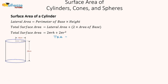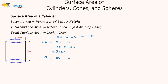Total surface area is lateral area plus two times the area of the base. Let's start with the lateral area. Lateral area is the perimeter of the base, which is 2πr times h. So this is going to be 2π times 14 times 25, which gives us 700π. Now the area of the base is πr squared, which is π times 14 squared, which is 196π.